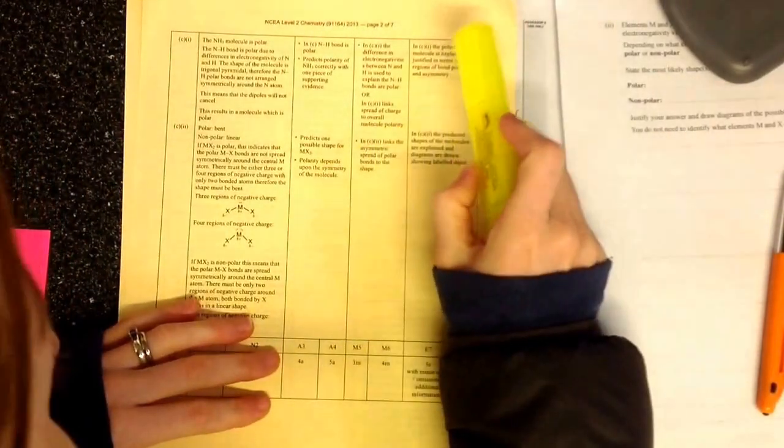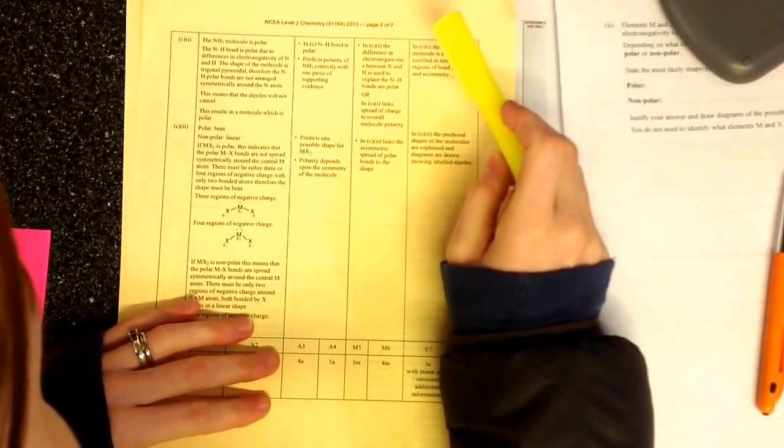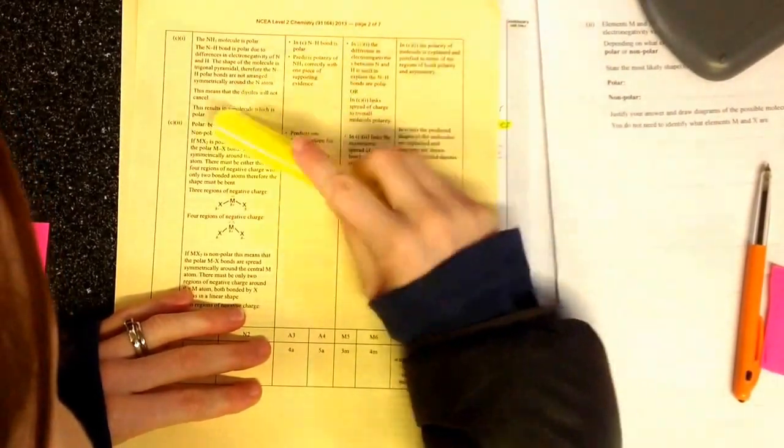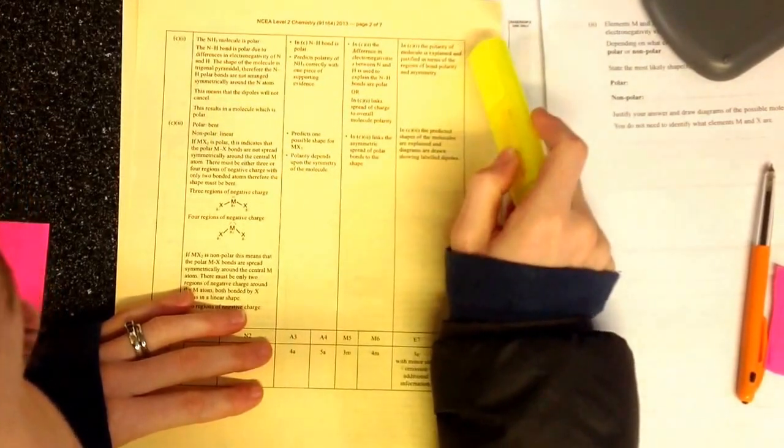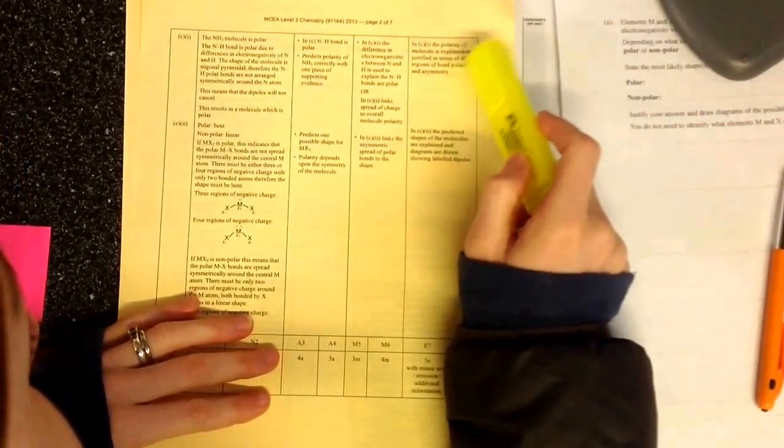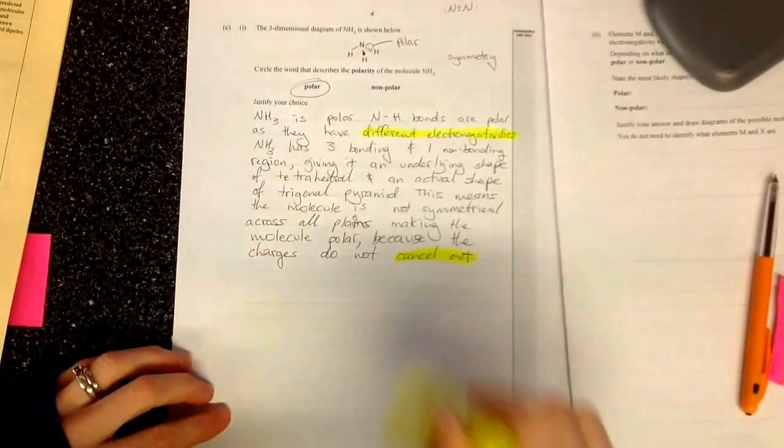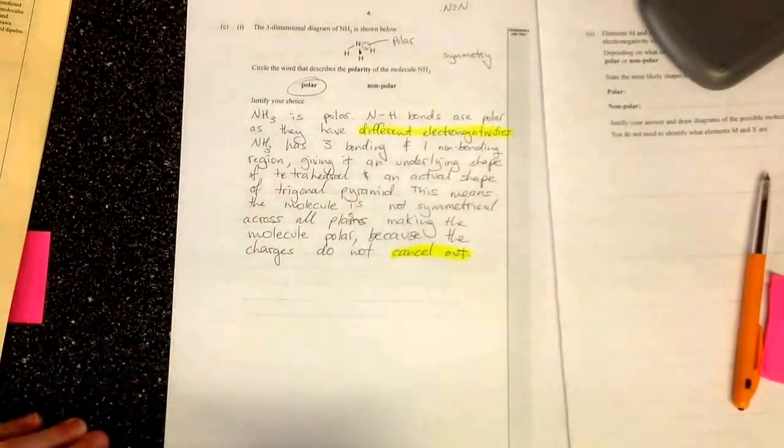That's the next question. In Excellence, the polarity of the molecule is explained and justified in terms of the regions of bond polarity and asymmetry. Here, I would mark as an excellent answer.